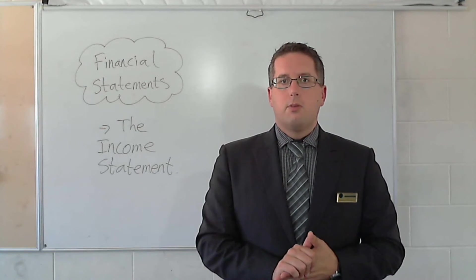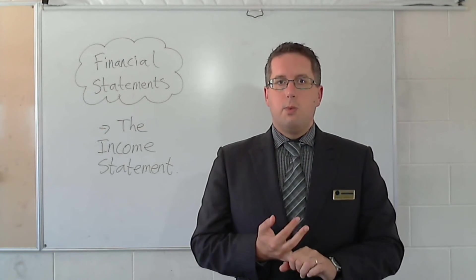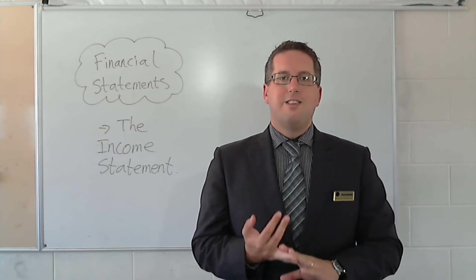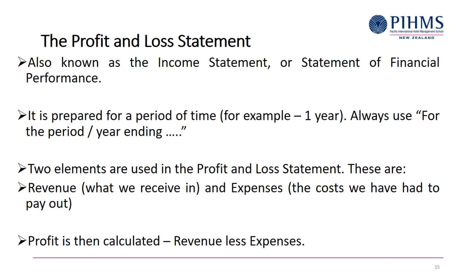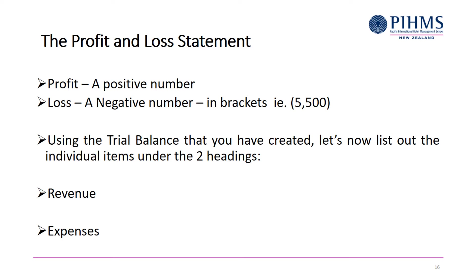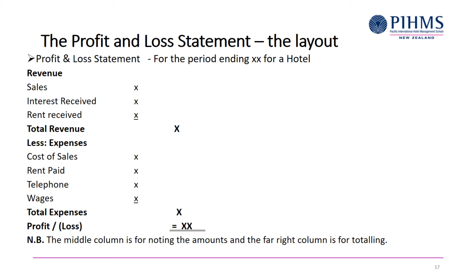The income statement always has revenue and expenses, but it also shows the detail. Profit will be a positive number; a loss occurs when revenue minus expenses gives a negative result. From the trial balance, grab all the items that are revenue and expenses. Here's a typical layout: you start with revenue at the top.